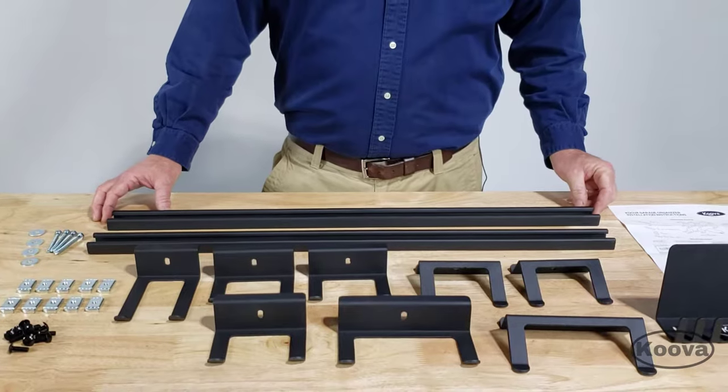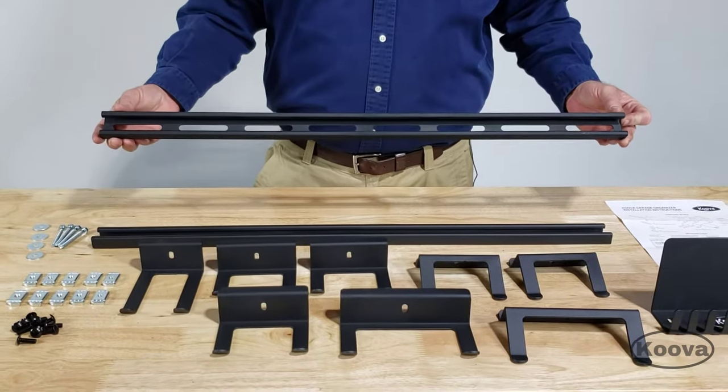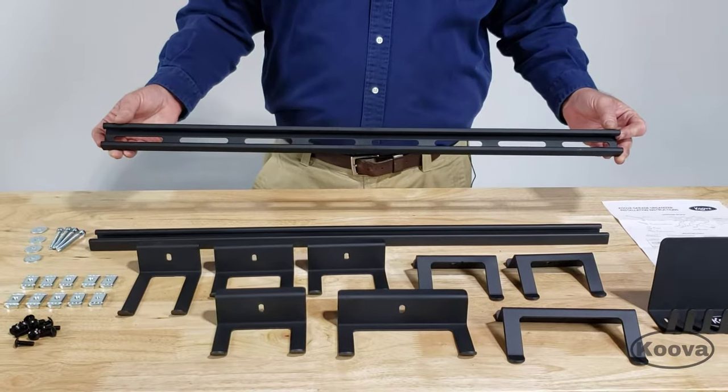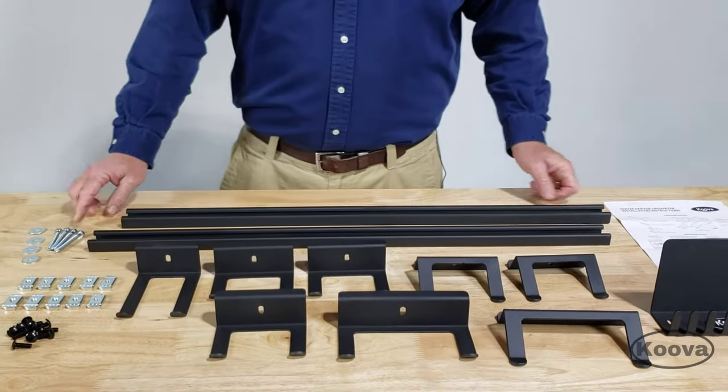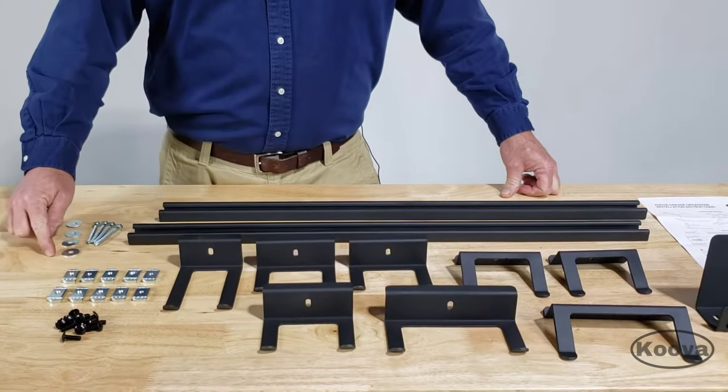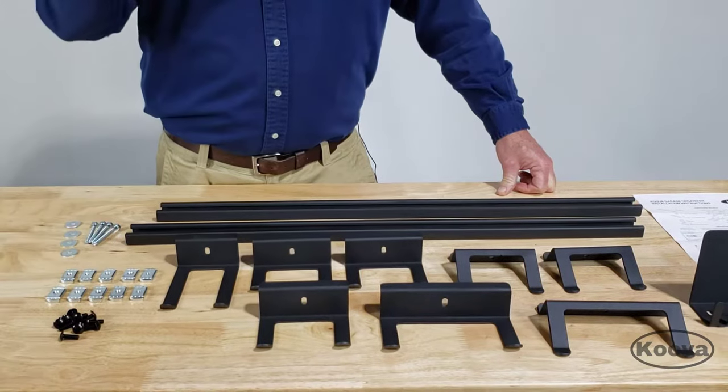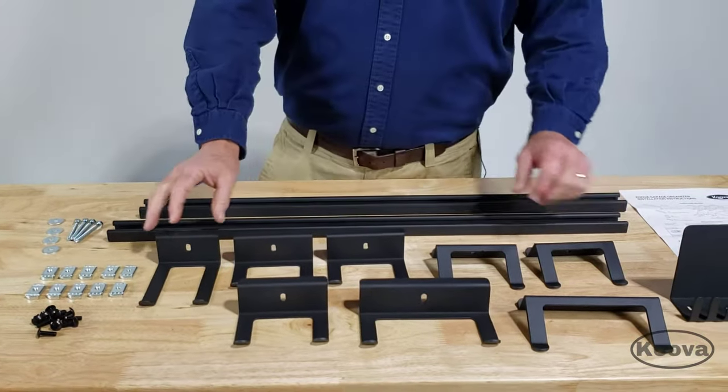Your Koova Garage Organizer includes two 32-inch Koova struts. These are the brackets that actually hold everything onto the wall. All the hardware: four lag bolts, four washers, ten Koova nuts, and ten Koova bolts. In addition, we include nine different brackets.